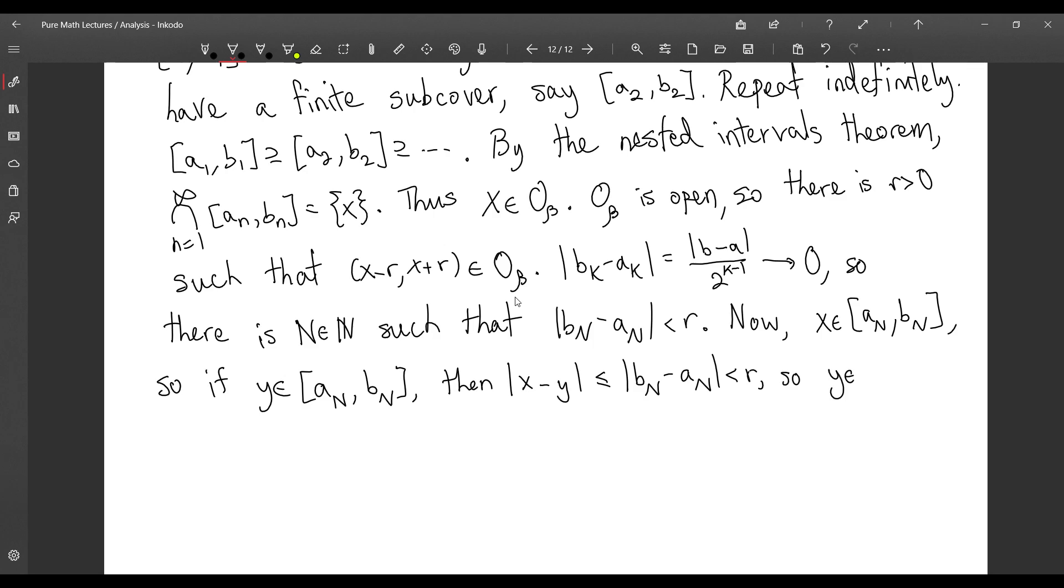So, Y is contained in X minus R and X plus R. Thus, Y is in O sub-Beta, because this is a subset of O sub-Beta. So, this shows that the entire interval A sub-N, B sub-N is a subset of O sub-Beta.